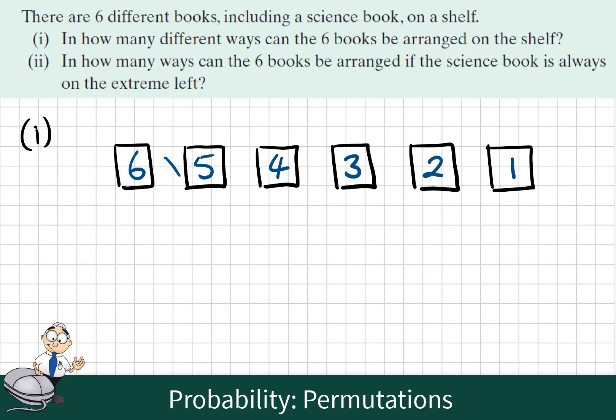These are the options and by the fundamental principle of counting if we multiply these options we get the total number of possibilities. Six by five by four by three by two by one is called six factorial.